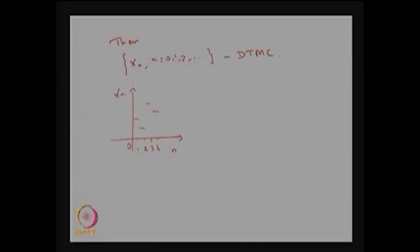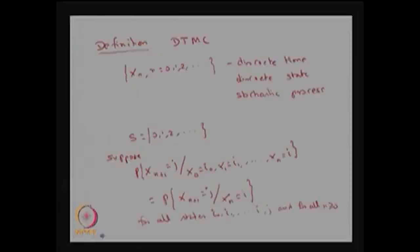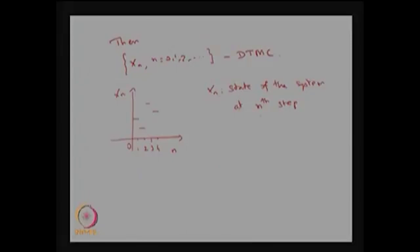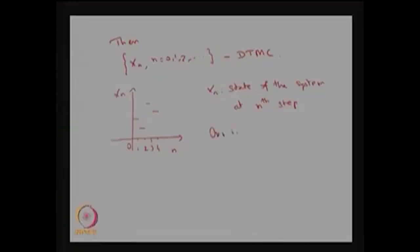The system takes different values over n. This is the sample path or trace of the stochastic process Xn. If Xn is the state of the system at the nth step, and Xn satisfies the Markov property, then the stochastic process is called a discrete time Markov chain. Our interest will be to know the distribution of Xn for n greater than or equal to 1.